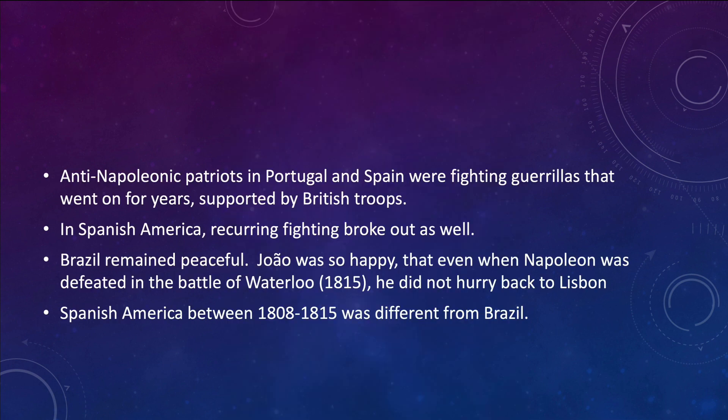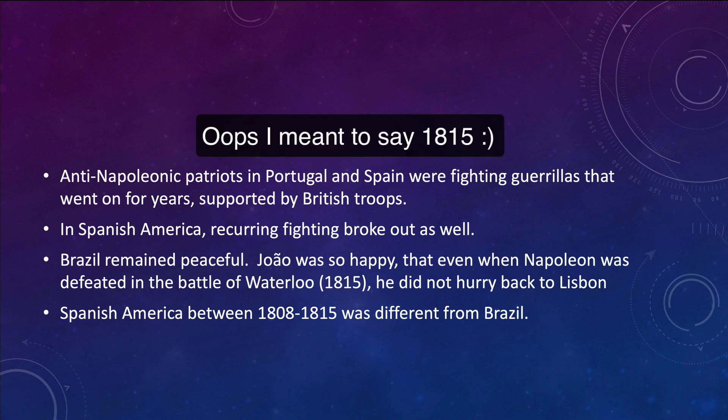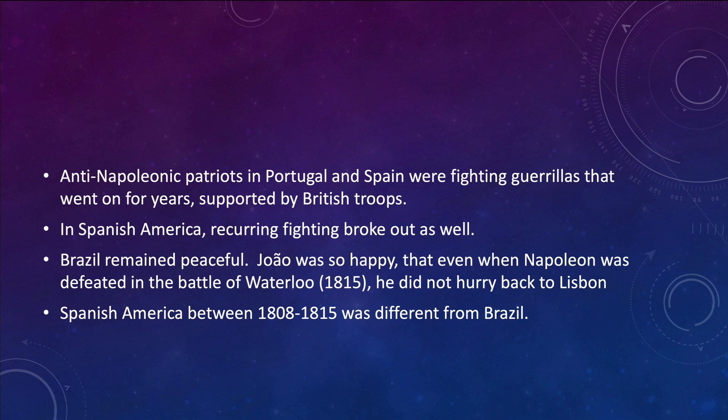The anti-Napoleonic patriots in Portugal and Spain fought guerrillas for years, supported by English troops. In Spanish America, there were recurring revolts from time to time, while Brazil remained peaceful. João was so happy in Brazil that even when Napoleon was defeated at the Battle of Waterloo, he did not hurry back to Lisbon, Portugal. The Spanish Americas between 1808 and 1815 were very different from Brazil — there were many revolts and independence movements that were not as peaceful.